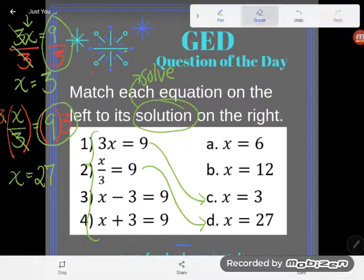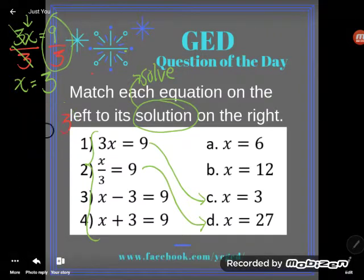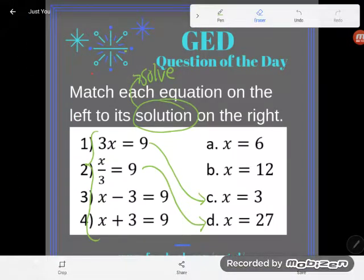Great, let's erase this here to give ourselves some room to work. And let's try the next equation. Next equation is a simpler one for most students. It says x minus three is equal to nine.